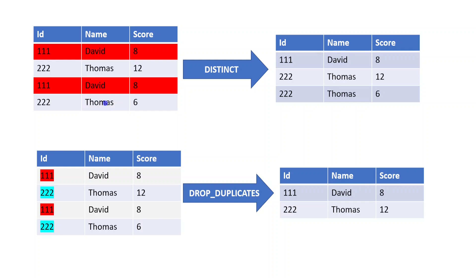Distinct does not support subset. When we apply distinct on the dataframe, for the two identical records 111 David 8, only one record is returned. But for 222 Thomas 12 and 222 Thomas 6, both are returned as-is, because when considering all columns they are unique. So the output retains three records.